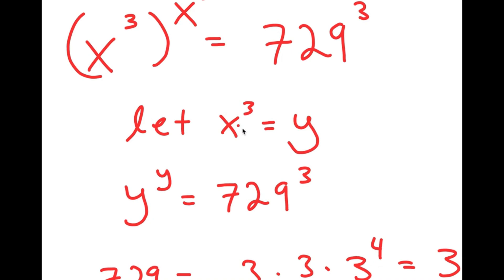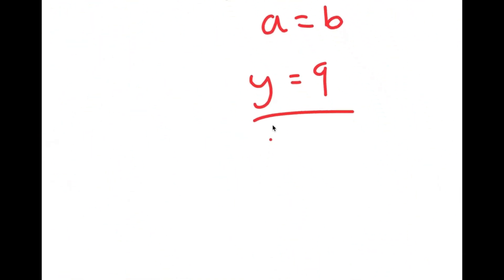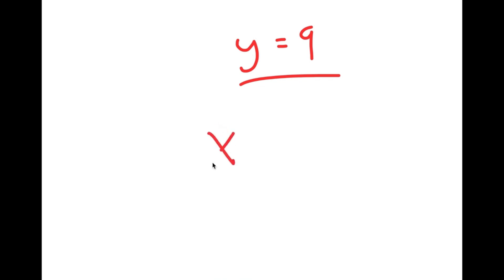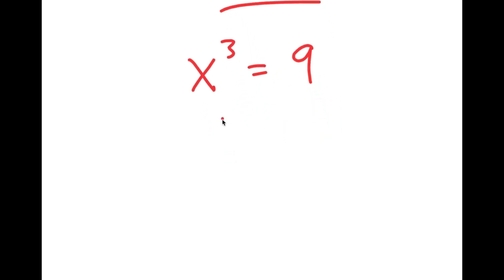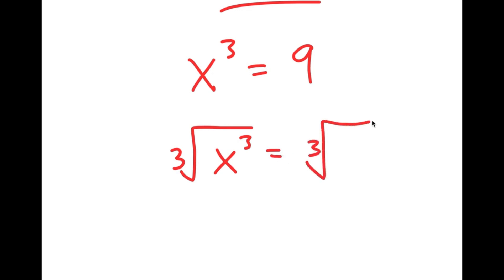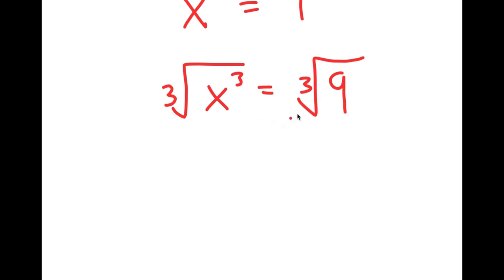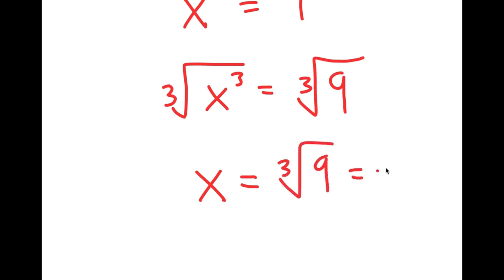Recalling that I let x to the power of 3 equal y, I now have x to the power of 3 equals 9. Taking the cube root of both sides, the cube root of x to the power of 3 is simply x, so x equals the cube root of 9, which is the same as 9 to the power of 1 third.